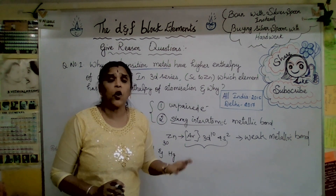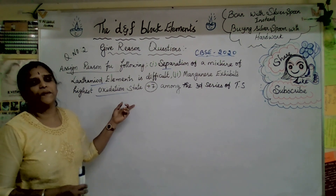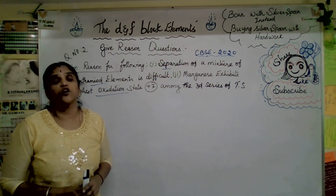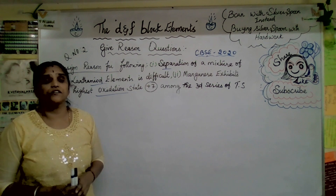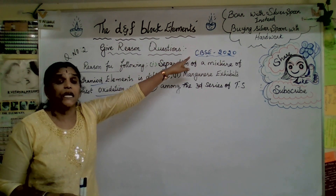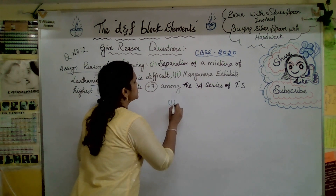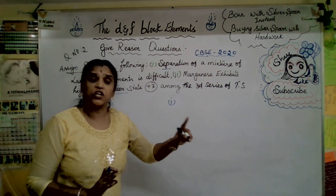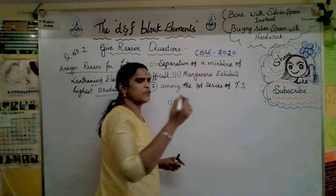The next question: separation of a mixture of lanthanoid elements is difficult — why? Also, manganese exhibits the highest oxidation state of +7 among the 3d series of transition elements — why? For the first question, the answer involves three main points: similar physical and chemical properties, due to lanthanoid contraction taking place, which causes a very small change in atomic and ionic radii.